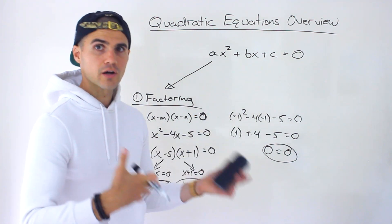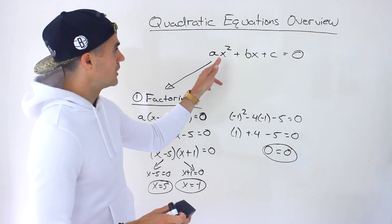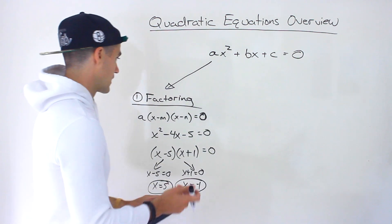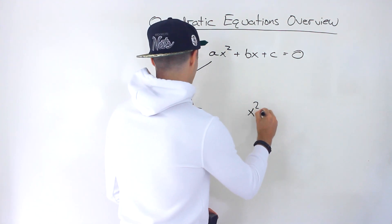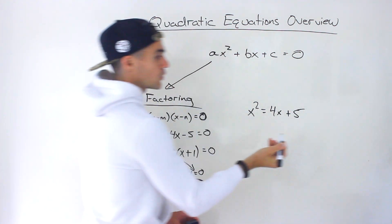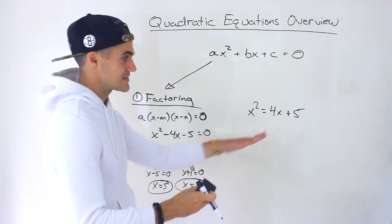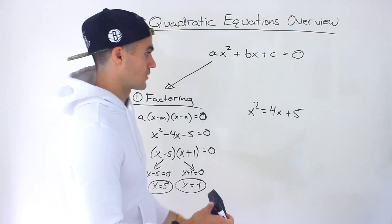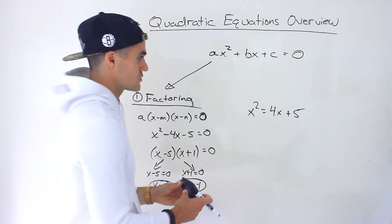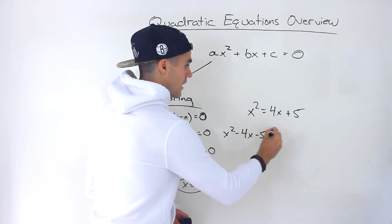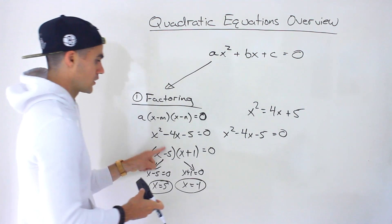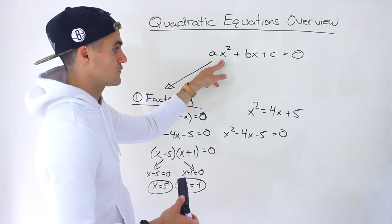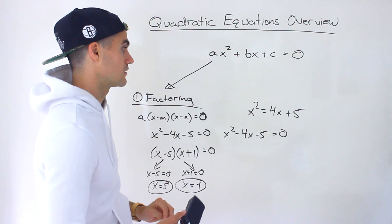Another thing to mention: a lot of times the equation won't be given in standard form. Sometimes it could be rearranged. For example, sometimes you'll get something like x squared equals 4x plus 5. What you want to do in this case is bring everything to one side to get it in the format where you have a quadratic equaling 0. So you could bring all values to the left side, leaving you with x squared minus 4x minus 5 equals 0. Now it's in standard form and you can proceed with factoring.